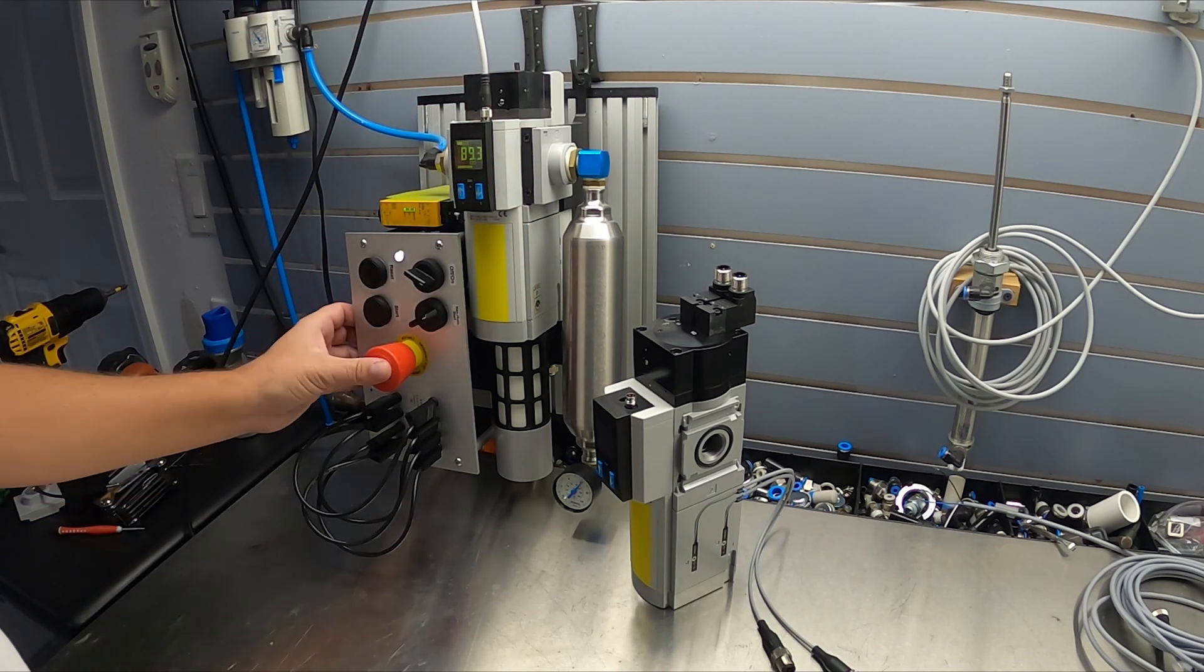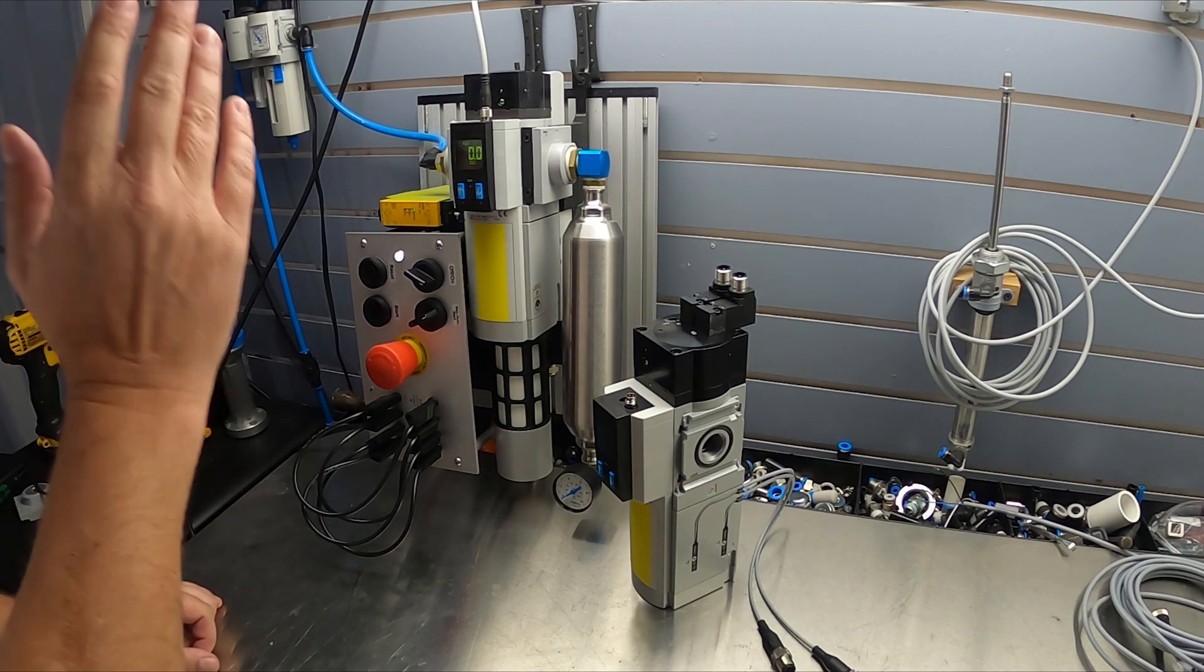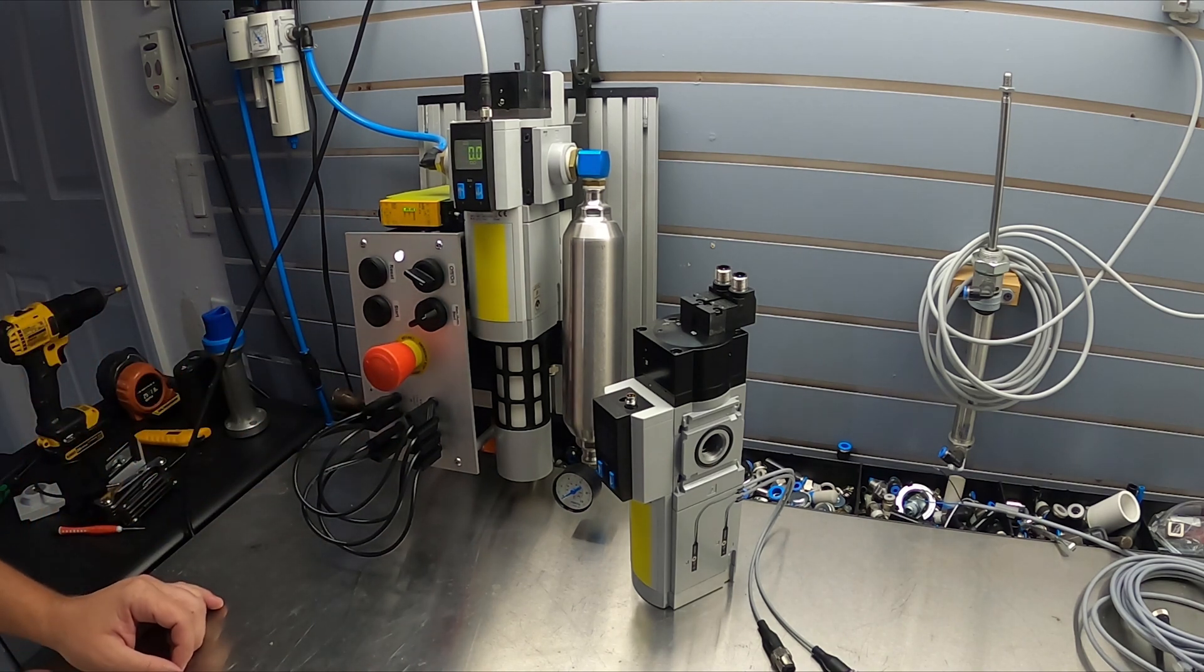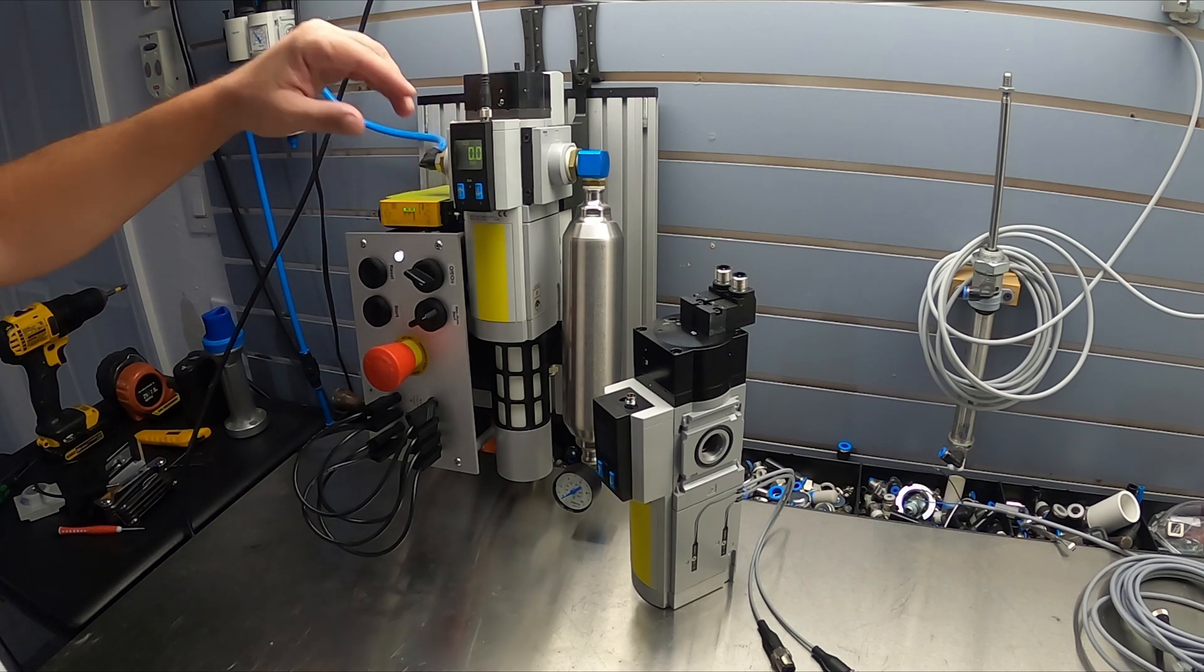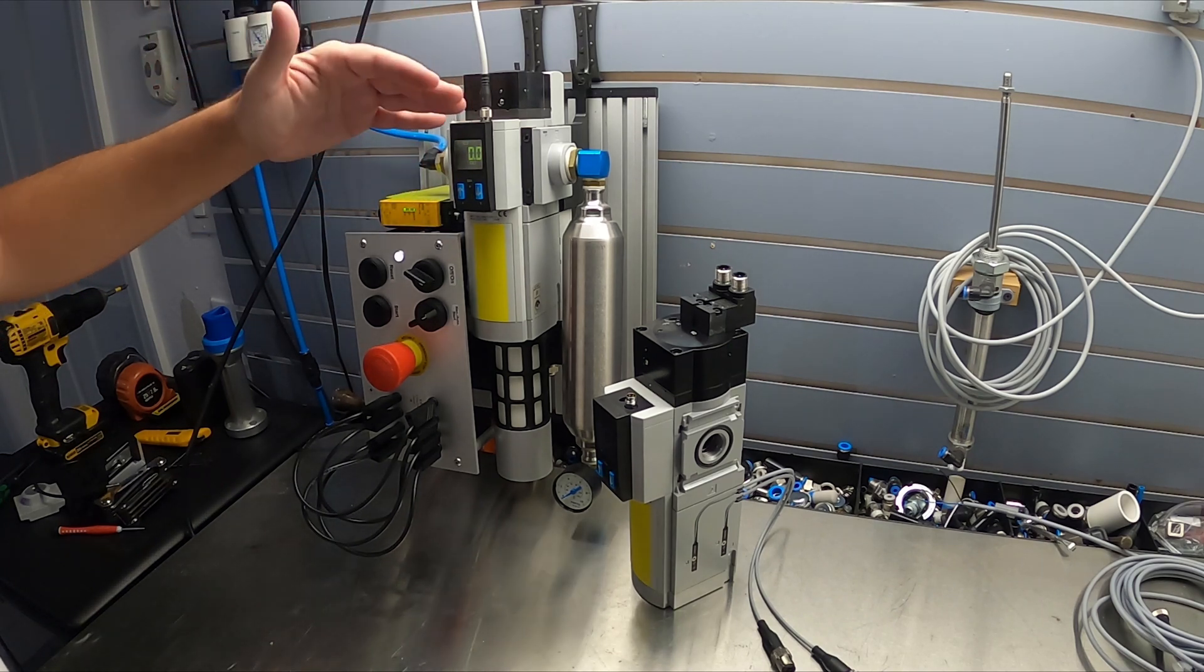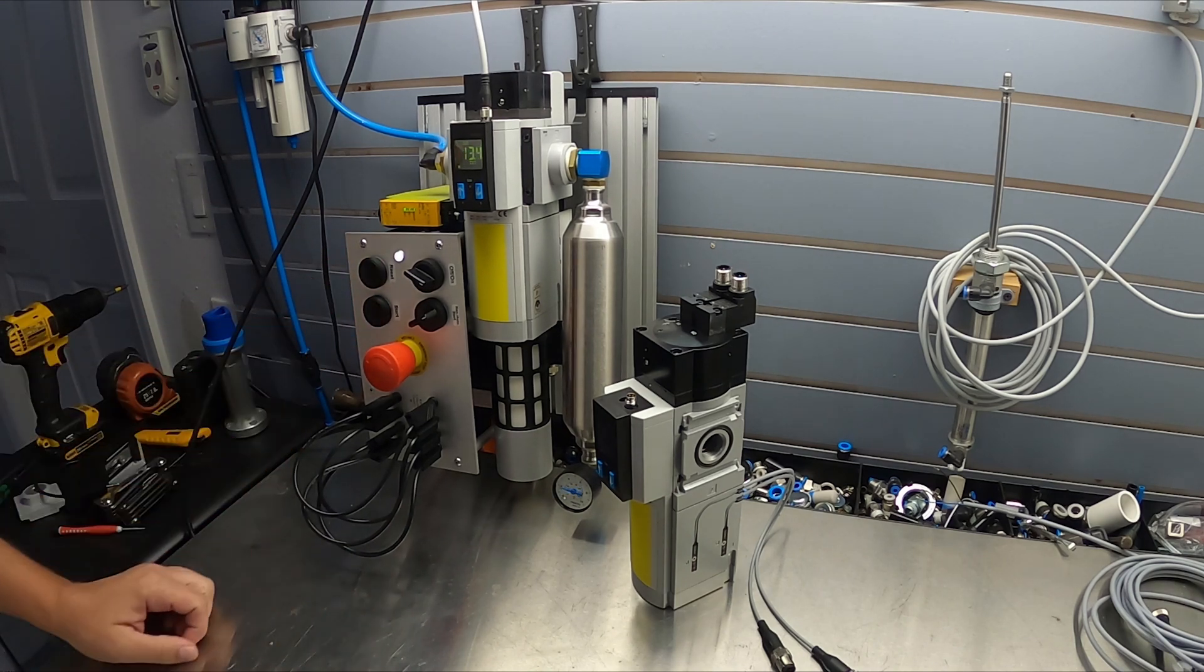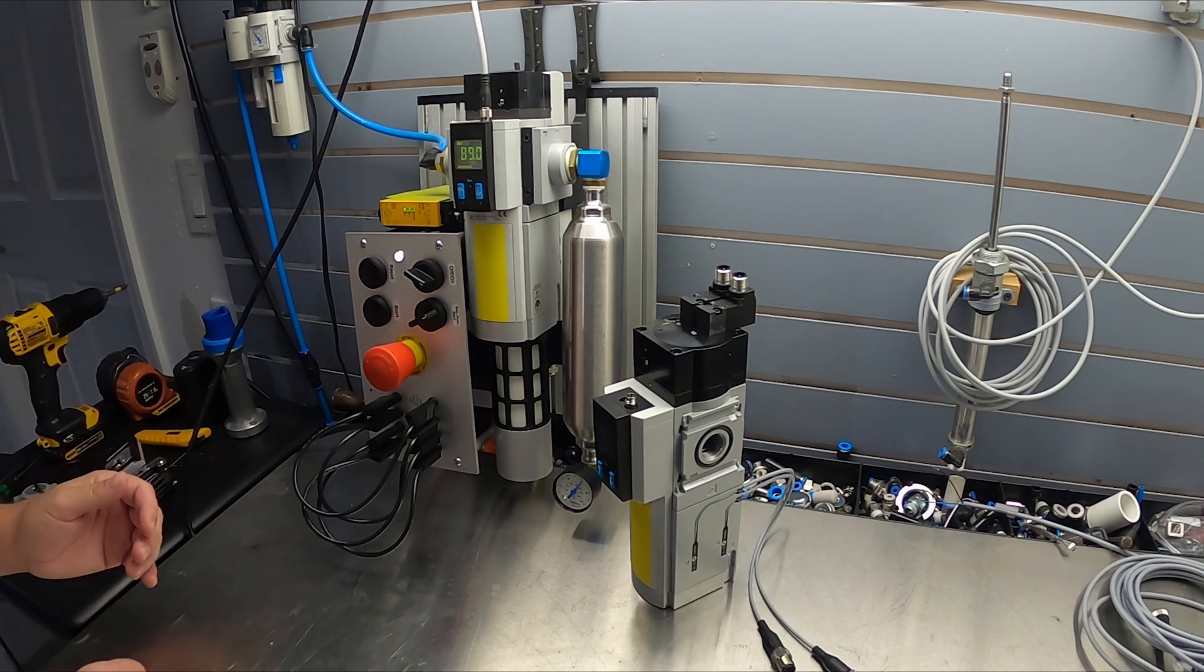E-stop. E-stop's pressed, air is dumped as it's supposed to. E-stop is reset and the relay over here is reset, but the downstream pressure still needs to be manually turned on. So I have to press it again manually and then the pressure goes downstream. So that's manual mode, pretty basic stuff.